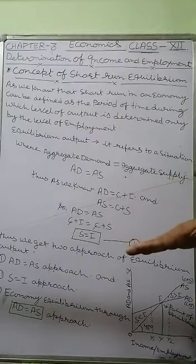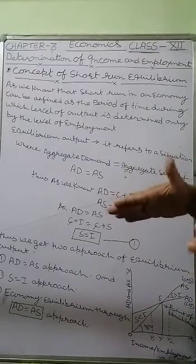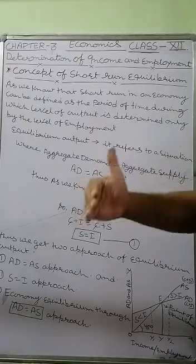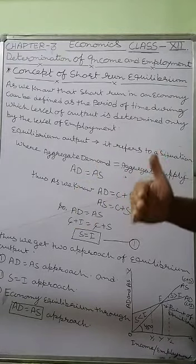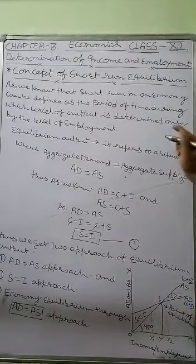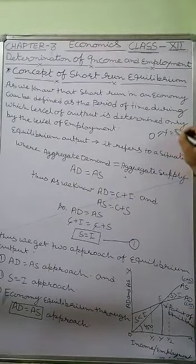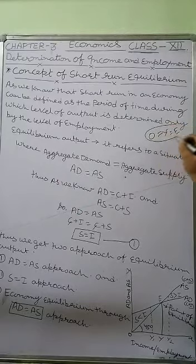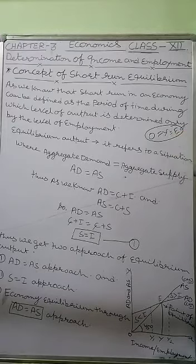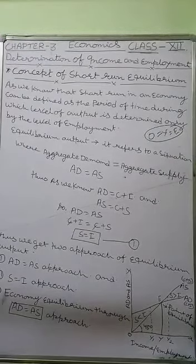In the short term, output and employment are perfectly associated with each other. The employment level determines the output level, and the output level in turn determines the employment level. This means there is a perfect correlation expressed as O equal to Y equal to E — output, income, and employment — a perfect positive association. This type of equilibrium can only be achieved in the short period in macroeconomics.